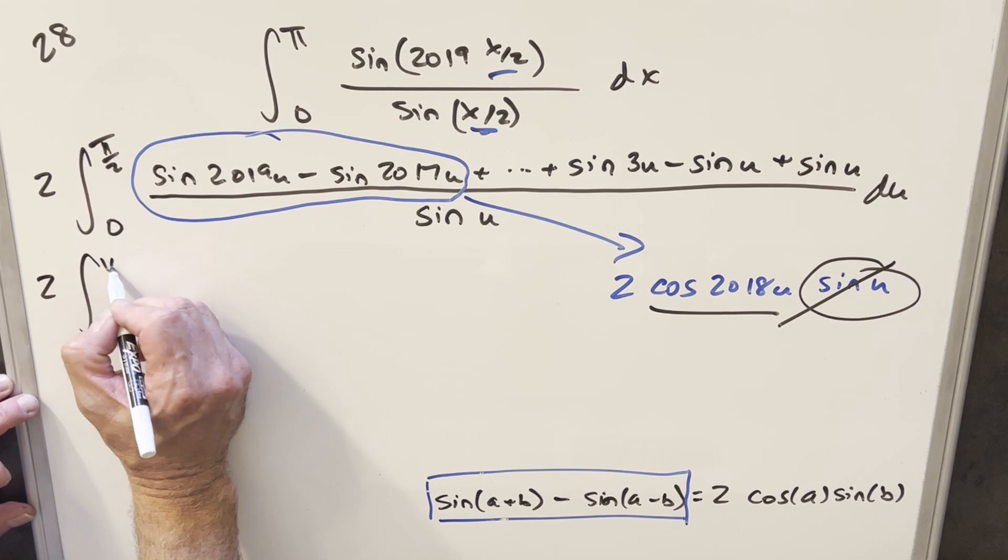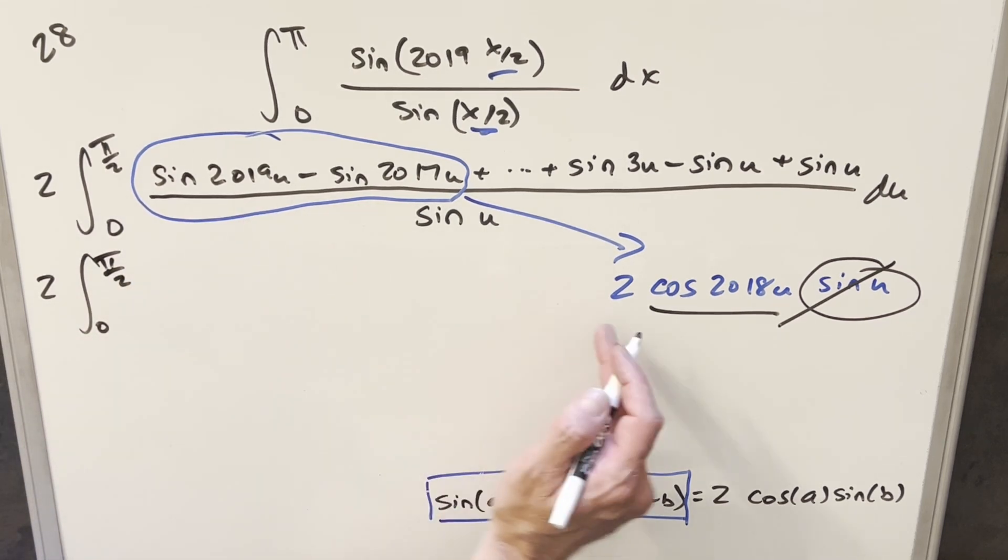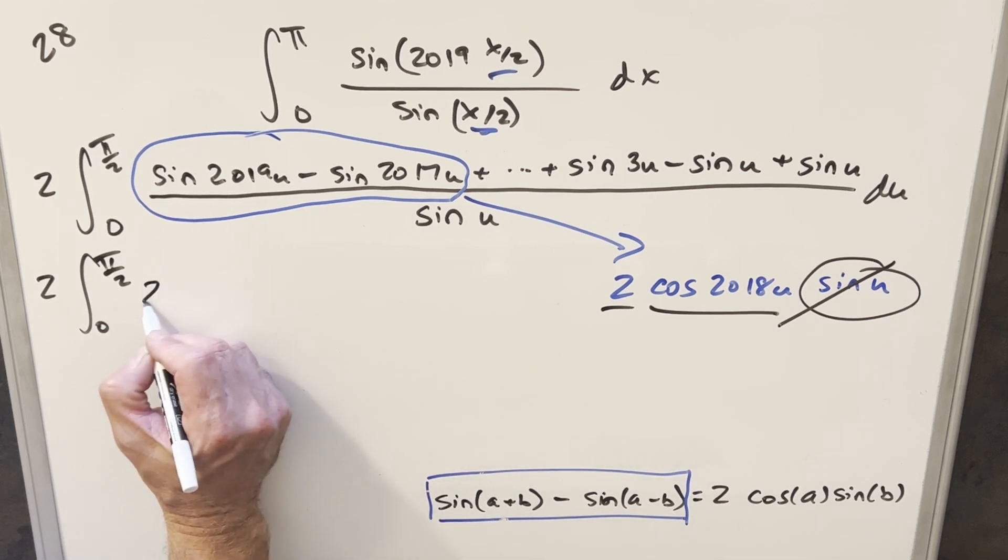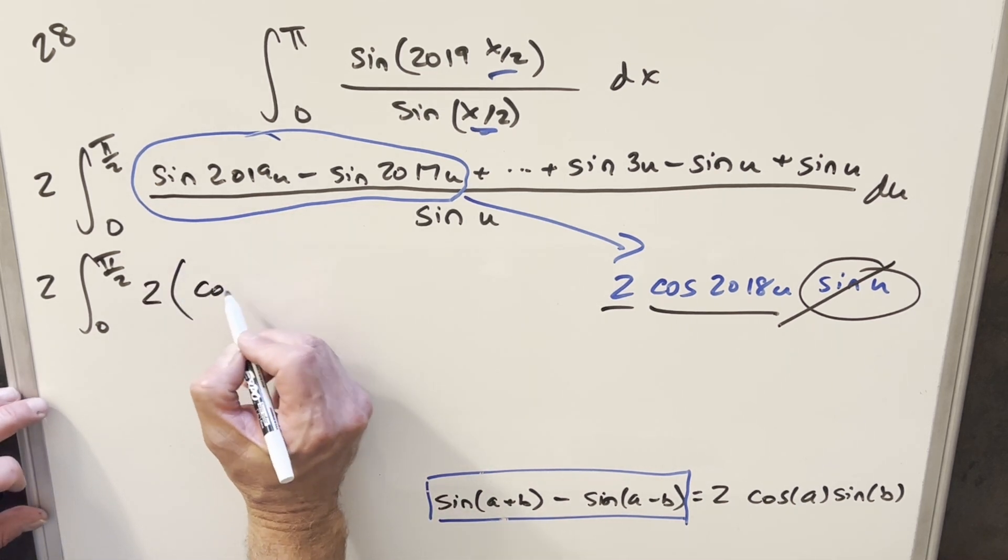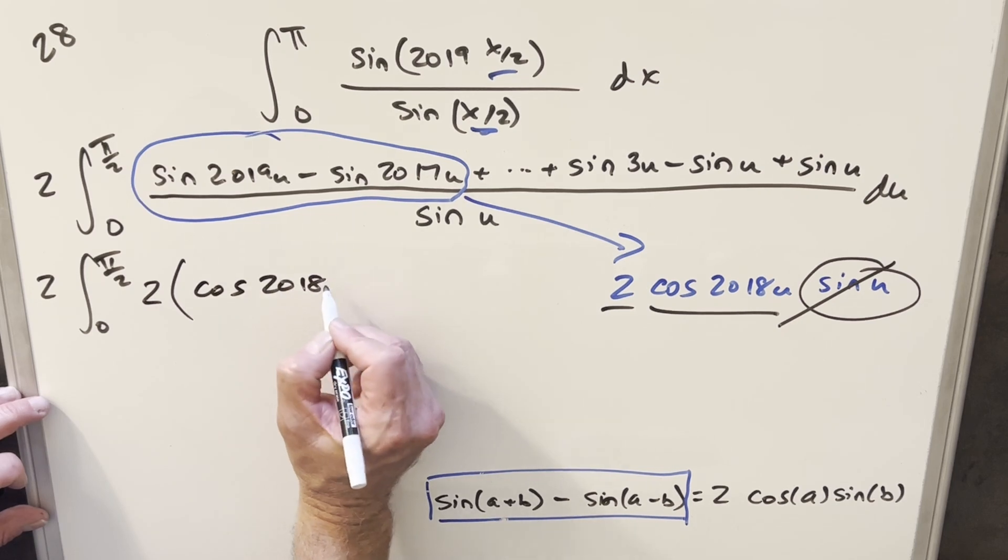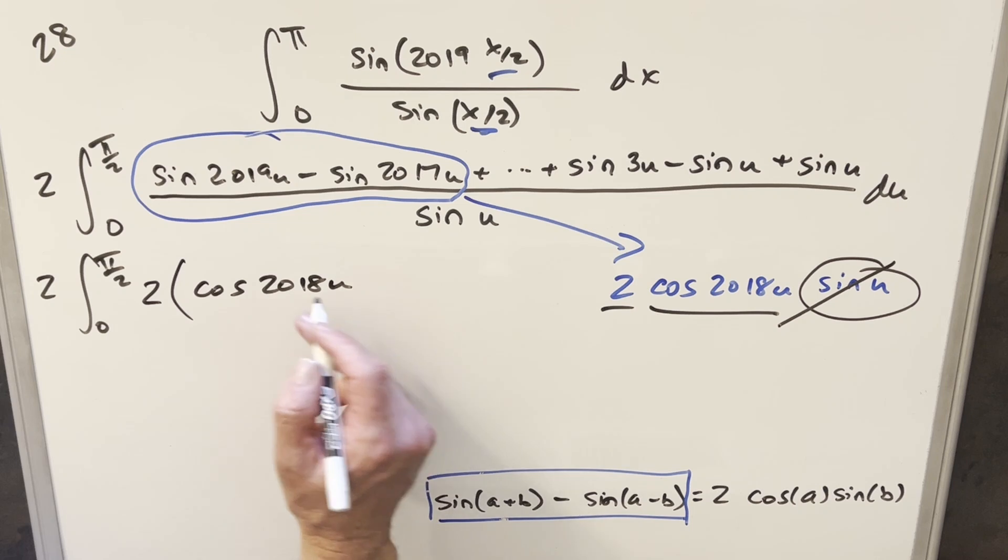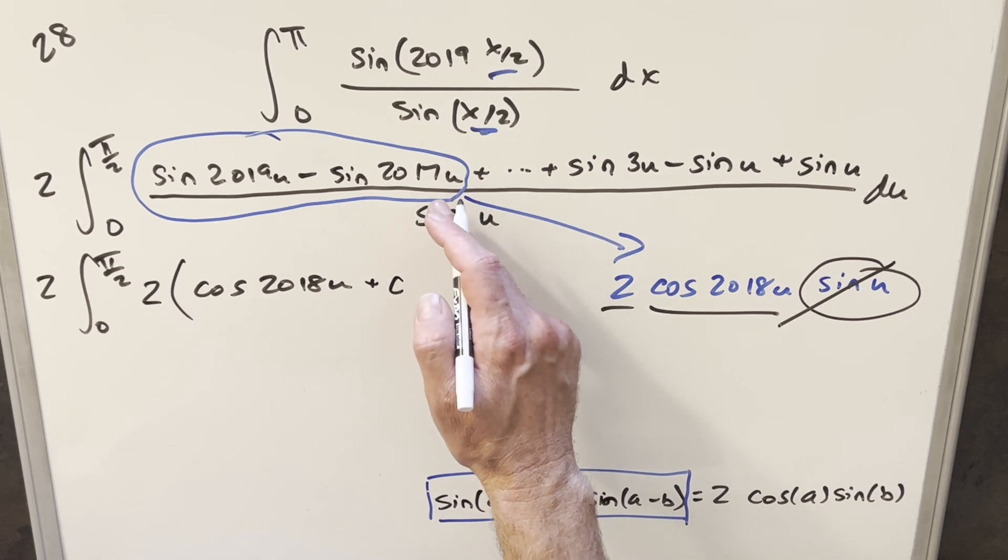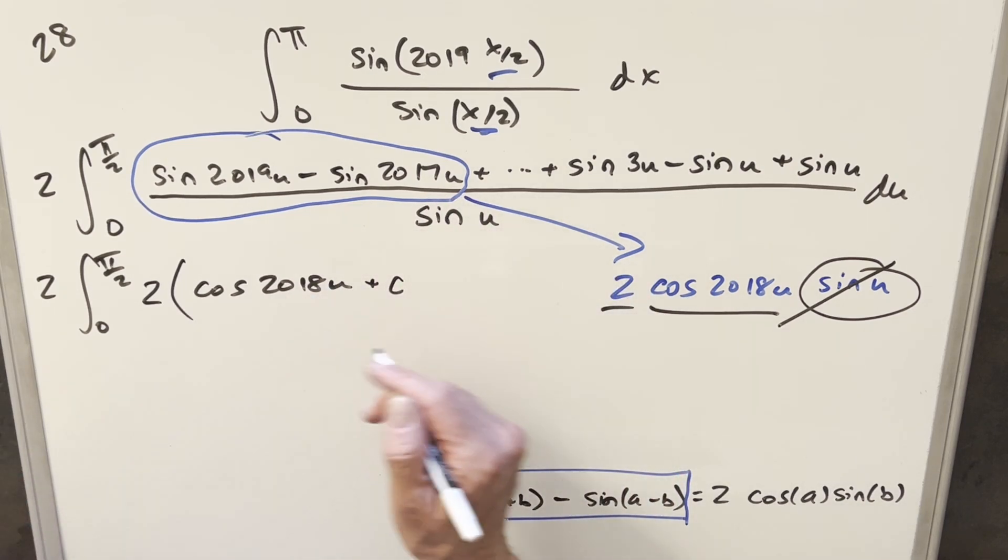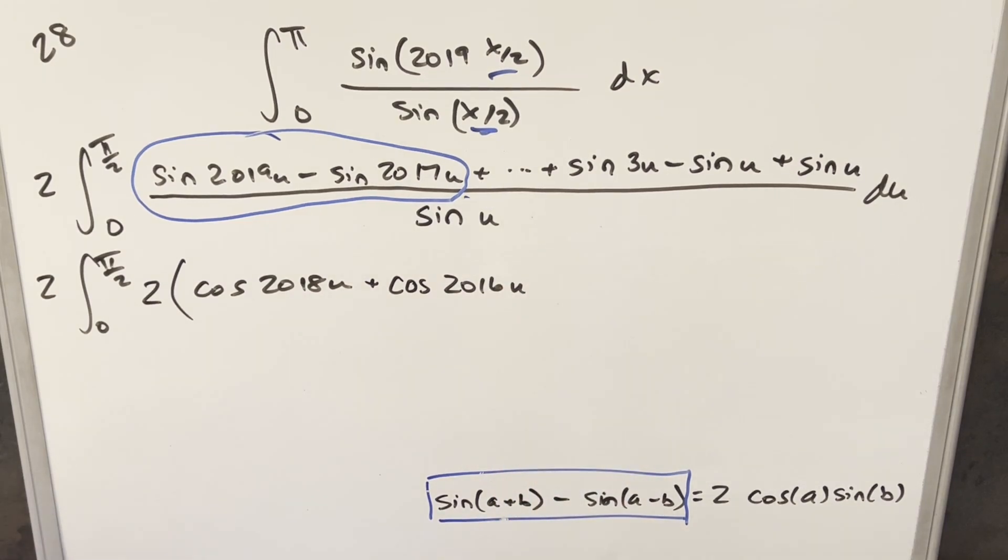We still have this 2 out front, bounds the same. Now, on every single term, we're going to have this 2 in front from the formula, so we're just going to factor 2 in front here. And then for the first term, we're going to have cosine 2018 u. And I'm already assuming the sine u is going to cancel out every one of them, so I'm not even going to write the denominator. We're just going to have cosine 2018 u, and then the next one is going to be between 2017 and 2015, so we take the middle term, which is going to be cosine of 2016 u.